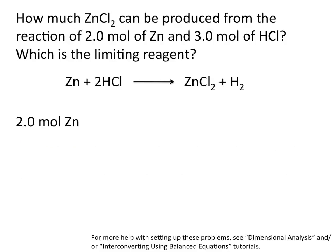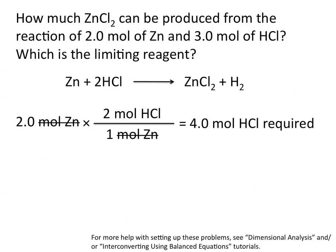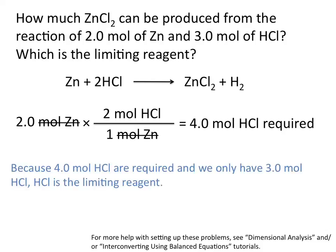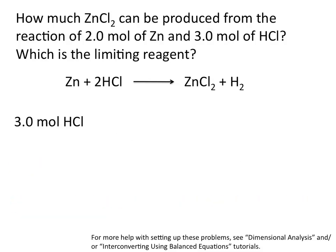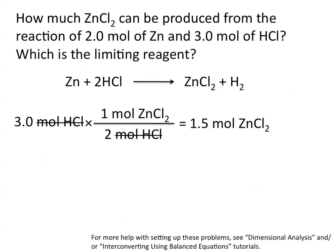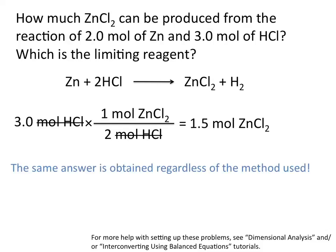You can start with either the two moles of zinc or the three moles of hydrochloric acid, but I'm choosing to start with two moles of zinc. I then use my balanced chemical equation to calculate how much HCl would be required to react with two moles of zinc. This tells me that in order to react two moles of zinc completely, four moles of hydrochloric acid are required. But in our problem we are only given three moles of hydrochloric acid, which means that hydrochloric acid must be the limiting reagent. We can now use the limiting reagent — three moles of HCl — and the coefficients in our balanced equation to convert to moles of zinc chloride. We arrive at the same answer: the theoretical yield of zinc chloride is 1.5 moles. The same answer is obtained regardless of the method used.